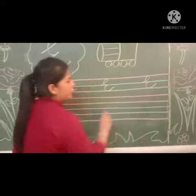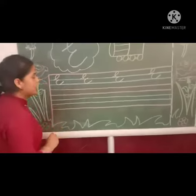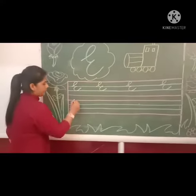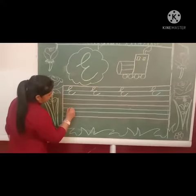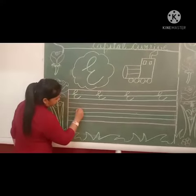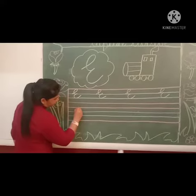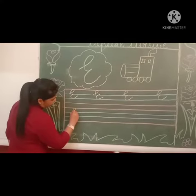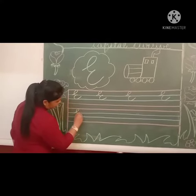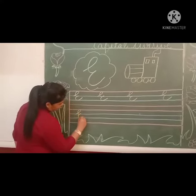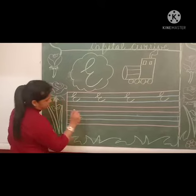Okay children, this way you write letter E. Slanting and up. Down. Make a curve and one more curve.